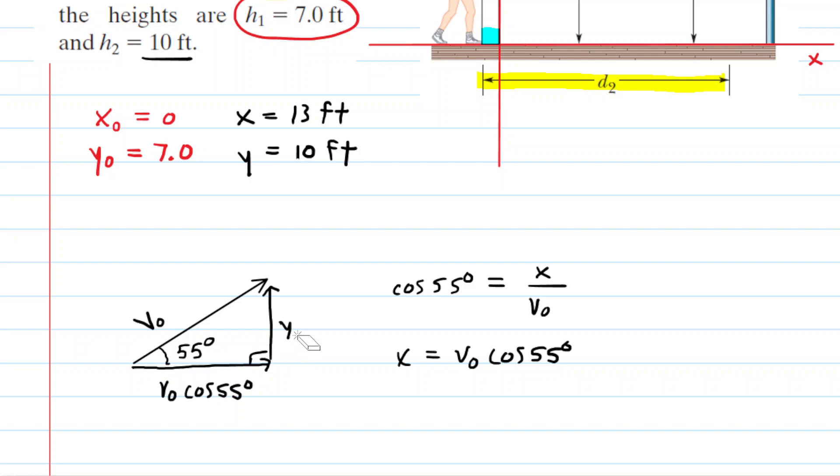Now, you could use the sine function to solve for y. We could say that the sine of 55 degrees is equal to the opposite, which is y, over the hypotenuse, which is the v-naught. And then multiply both sides by v-naught. You can see that that y-velocity is v-naught times the sine of 55. So let's go back and label that on our triangle here. This was v-naught sine of 55.